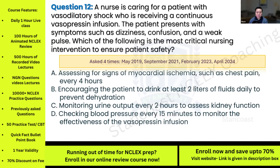Options: A) assessing for signs of myocardial ischemia such as chest pain every four hours; B) encouraging the patient to drink at least two liters of fluids daily to prevent dehydration; C) monitoring urine output every two hours to assess kidney function; D) checking blood pressure every 15 minutes to monitor the effectiveness of the vasopressin infusion.